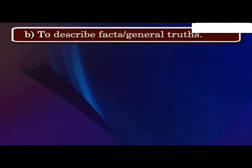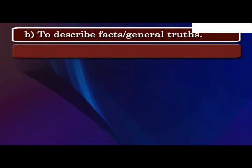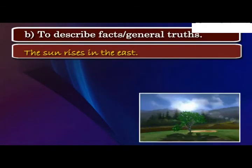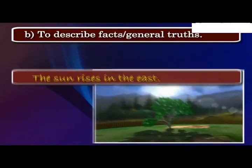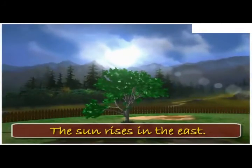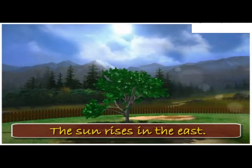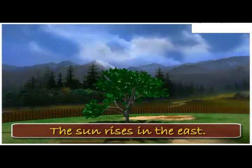Use B: It is used to explain facts or general truths. Example: The sun rises in the east. Here, this sentence is used to explain the fact that the sun always rises in the east.